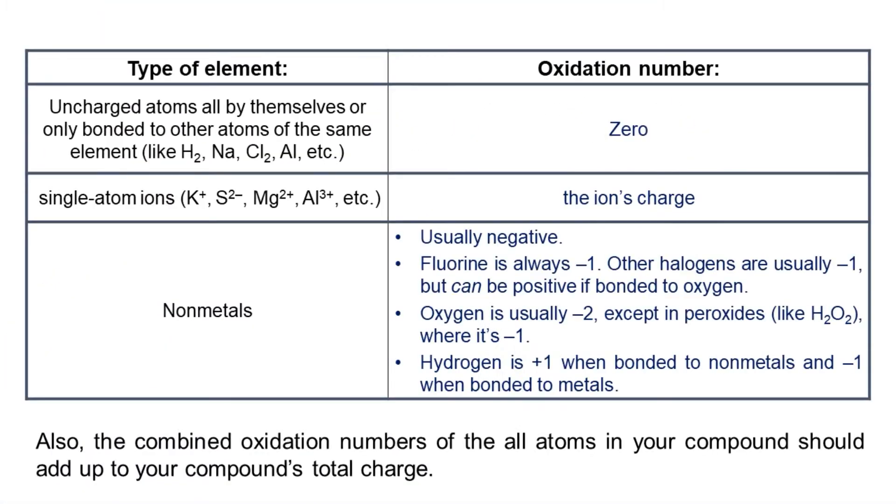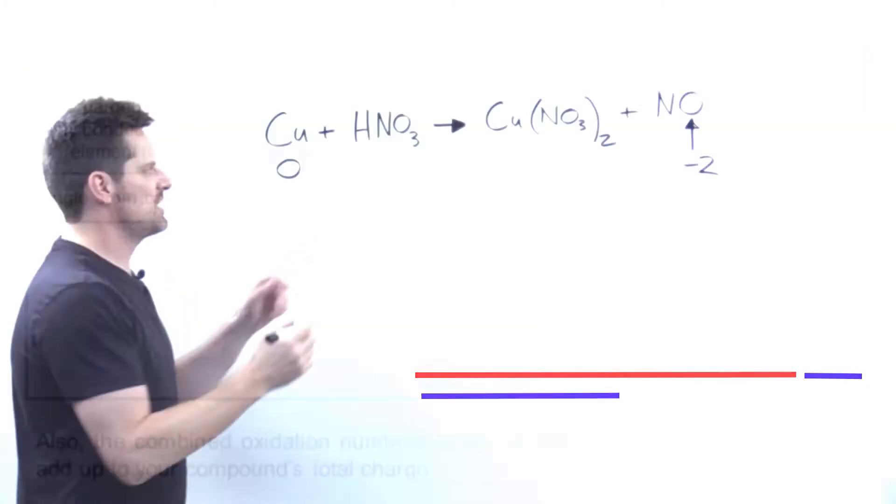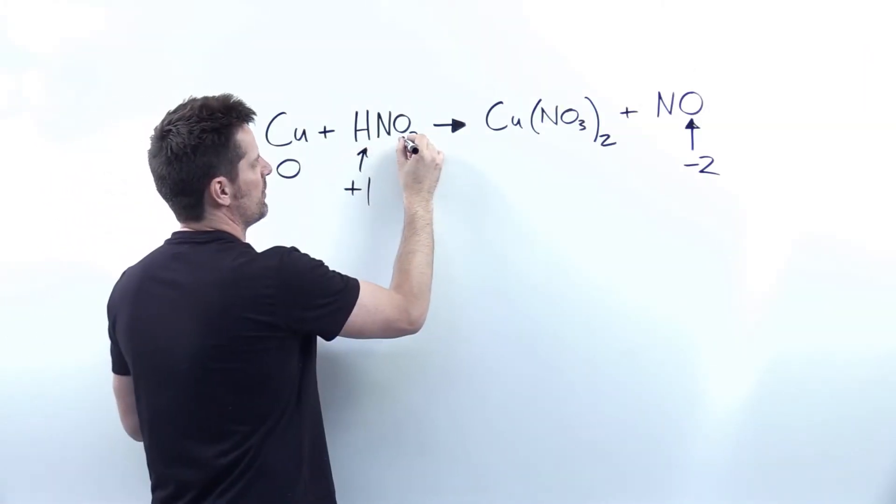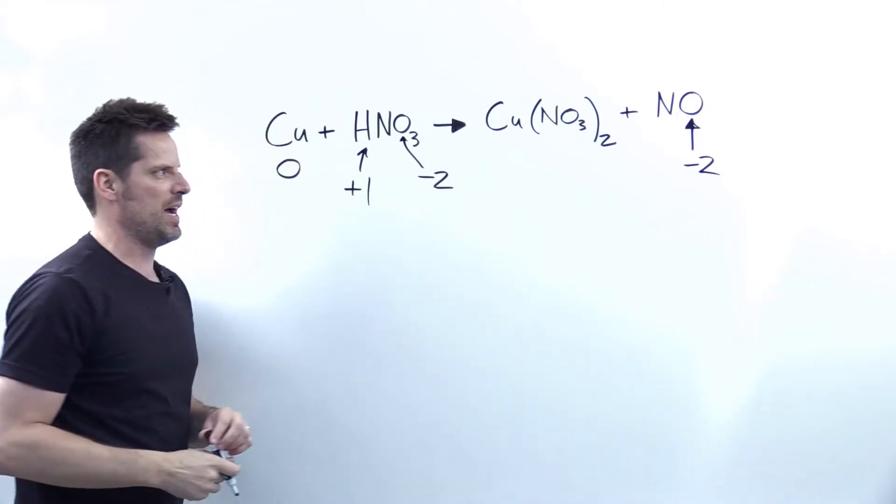Now for hydrogen. As before, anytime you have hydrogen all by itself with no charge, as in molecular H2, its oxidation number is zero, just like everybody else. Separate from that, whenever hydrogen's bonded to non-metals, its oxidation number is plus one, and whenever it's bonded to metals, it's minus one. Most of the time in freshman college chemistry, you'll see hydrogen bonded to non-metals, as is the case right here. The oxygen here, of course, is also going to be negative two, like the oxygen on the other side.